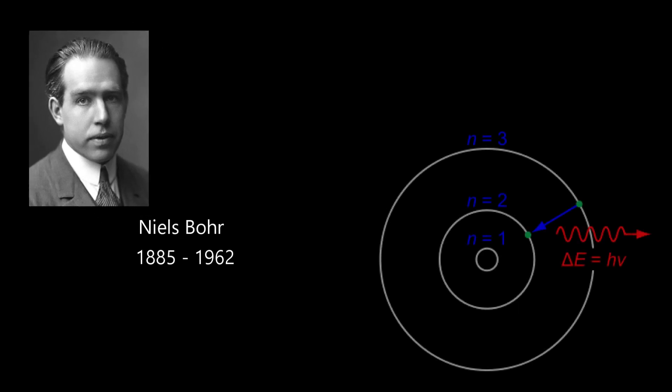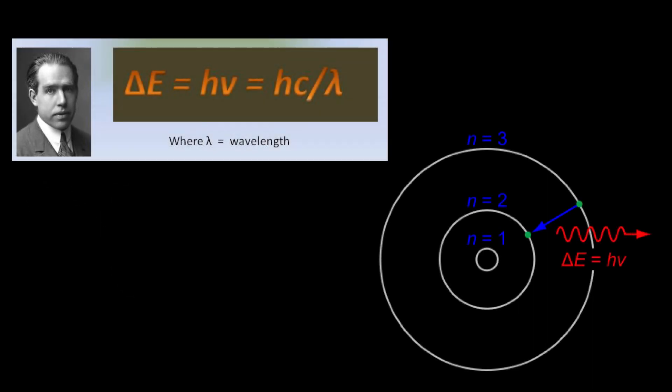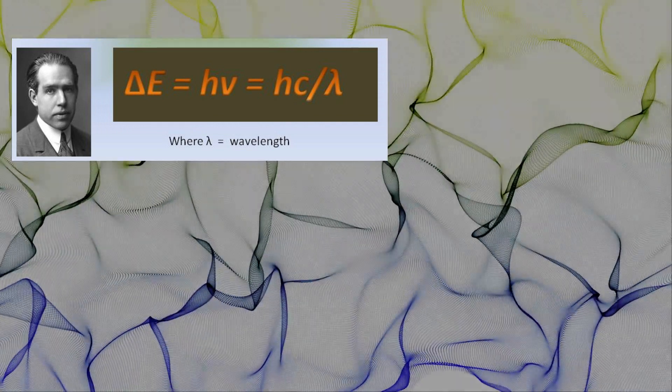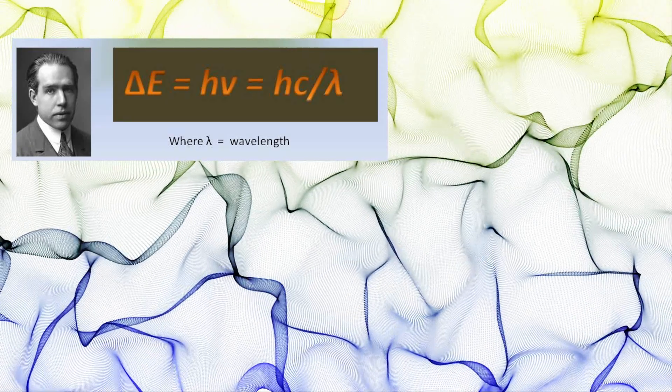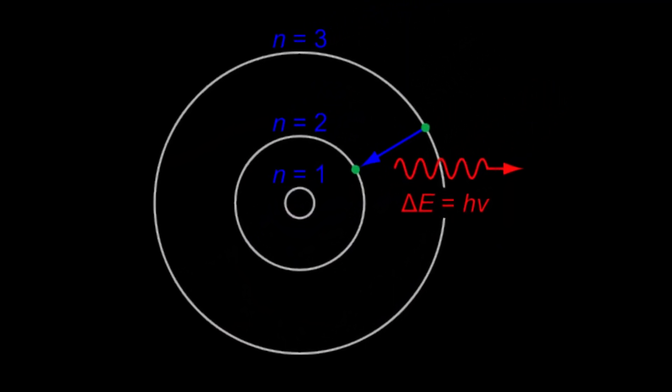Niels Bohr would follow up on Einstein's work to find another application of Planck's constant to work out the inner structure of the hydrogen atom and introduce the concept known as a quantum leap. In Bohr's model, a negatively charged electron orbits a positively charged nucleus at a ground state. When a photon randomly strikes the electron, the added energy changes the orbit for an instant before releasing another photon and returning to the ground state.